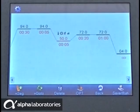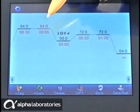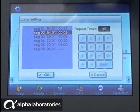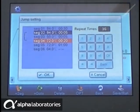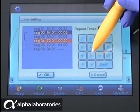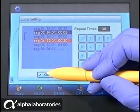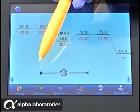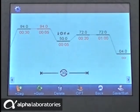To input the number of cycles to run, select the first temperature segment to be cycled and touch Go To. Select the final segment to be cycled and enter the number of repeat times. Touch OK. The number of cycles is now displayed. The maximum number of cycles is 99, making it suitable for nested PCR protocols. And it is possible to add more than one set of repeat cycles into a program.